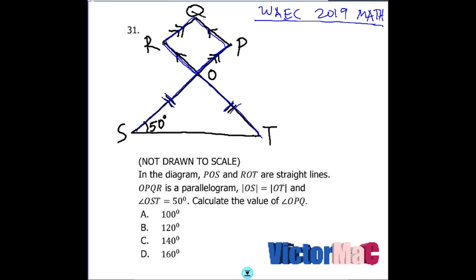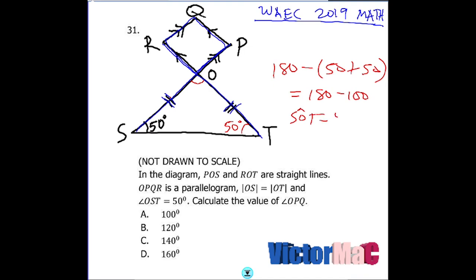Angle OST is 50 degrees, which tells us that the base angles will be equal — 50 degrees on the left and on the right — since they're facing the equal sides OS and OT. So the third angle in this triangle is found by summing up the two interior angles and subtracting from 180. So 180 minus 100 means angle SOT is 80 degrees.